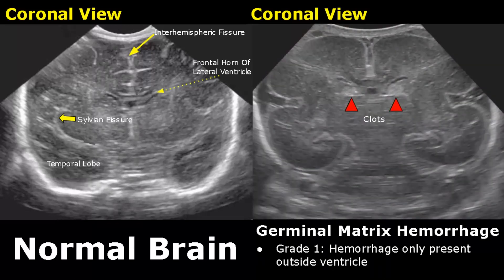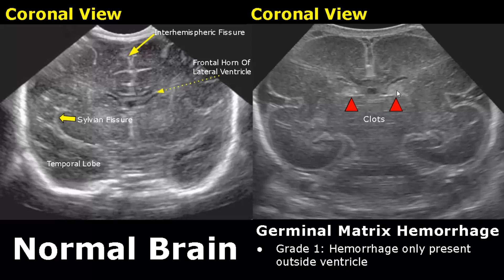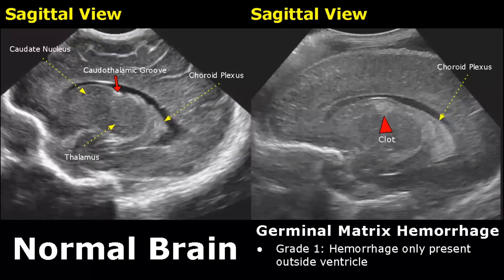Most intracranial hemorrhages in neonates are germinal matrix hemorrhages, also called periventricular intraventricular hemorrhages. They mostly occur in premature infants. This has four grades. In grade one, the hemorrhage is only present outside the ventricle — we will see hyperechoic clots outside the lateral ventricles. This image in sagittal view shows a clot outside the ventricle — this is grade one germinal matrix hemorrhage.